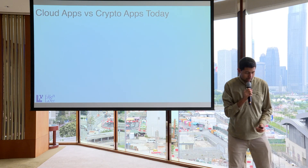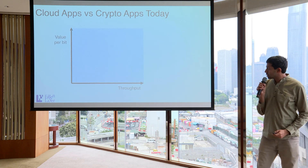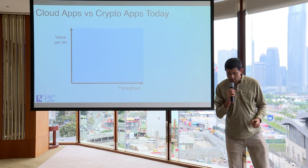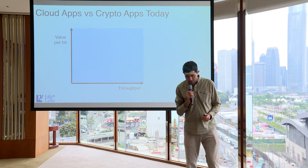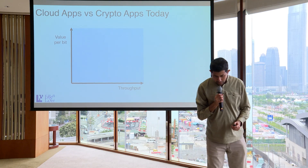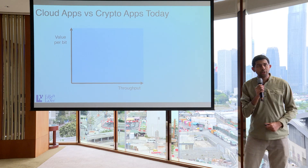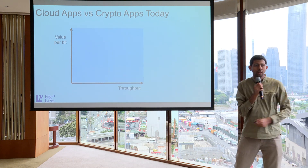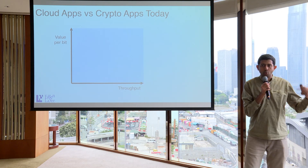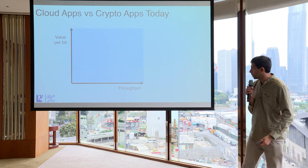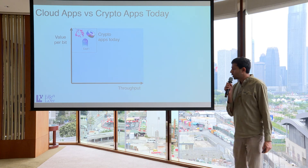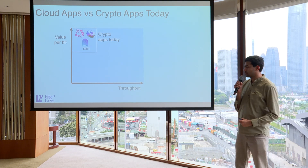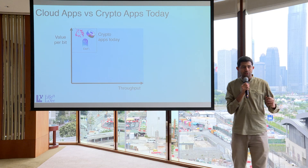So why is this important? When you think about applications — Yachi just talked about gaming and other social applications — you can split them in two dimensions. One is throughput: how fast can you run the application? The second is how much value is being transacted on that application? Today, a lot of crypto is basically high-value applications with low throughput. That's where we are today.